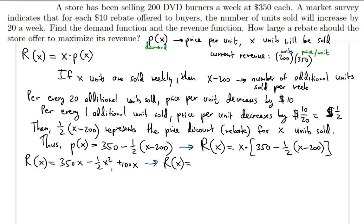Let's put this in order of decreasing power. We get negative one half X squared plus 450X. This is a typical quadratic equation where the parabola opens down, so it has a vertex which represents the maximum revenue. The shape opens downward and the vertex is the highest point — the greatest revenue possible.